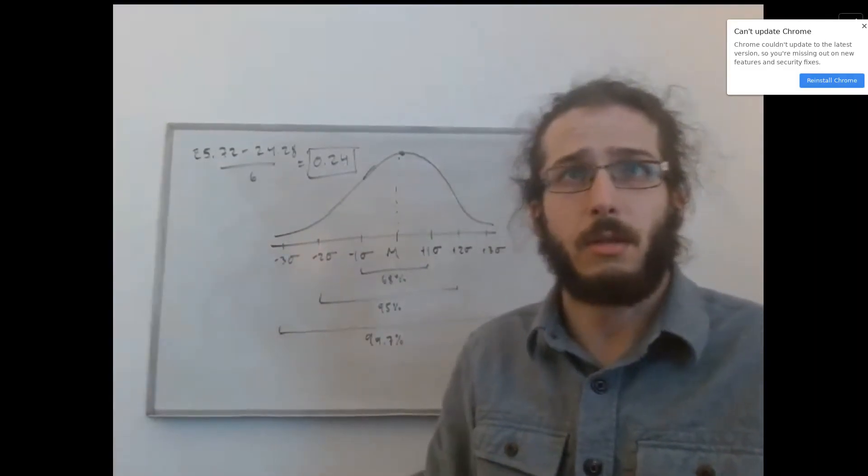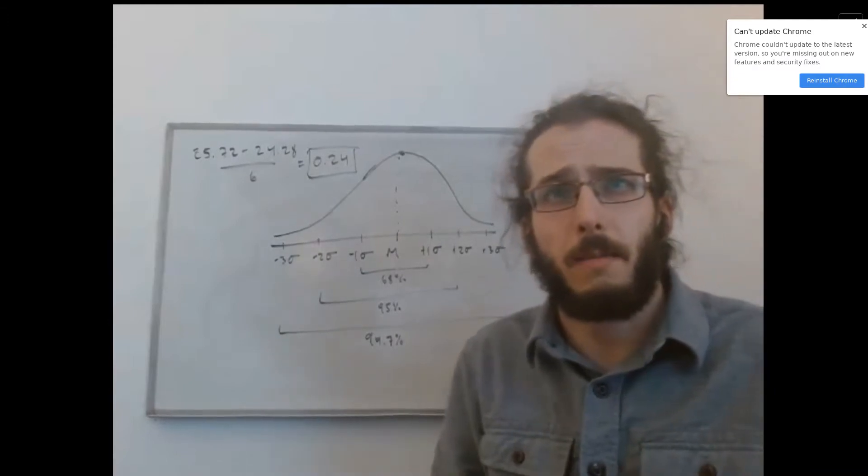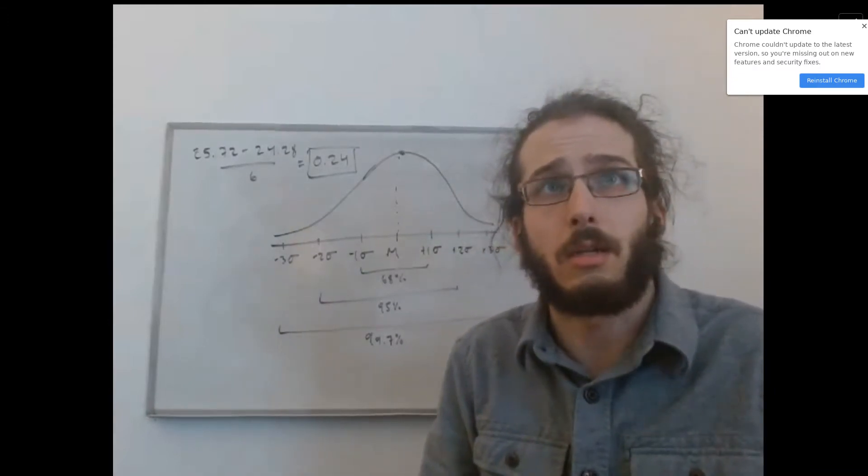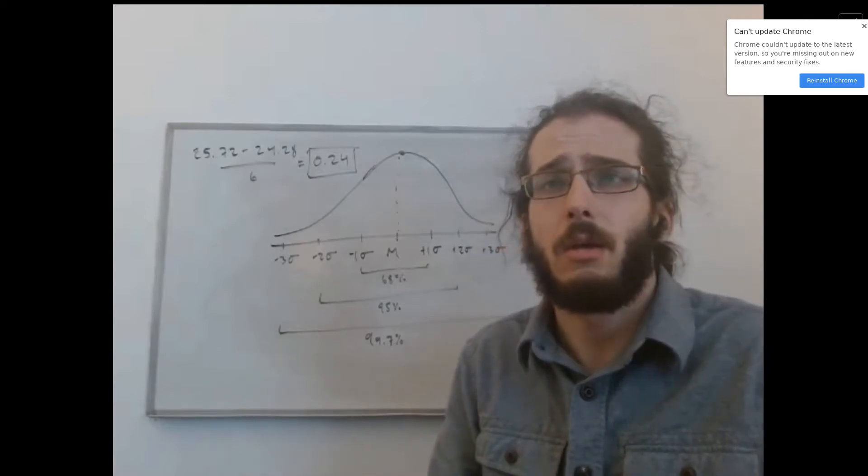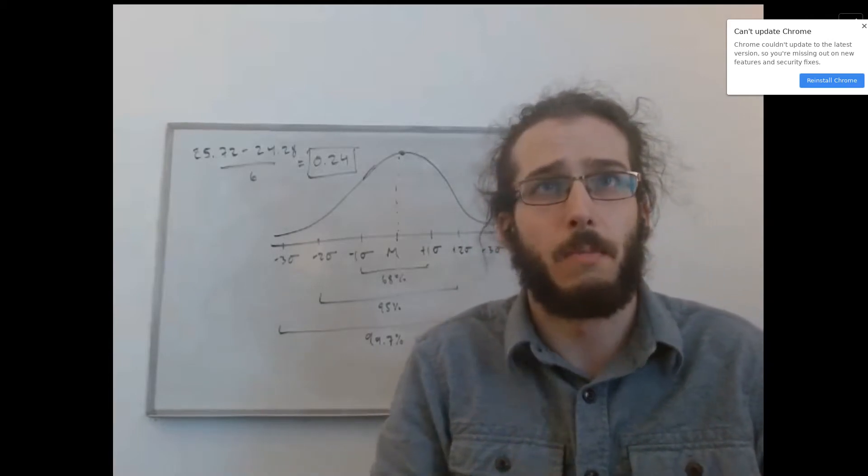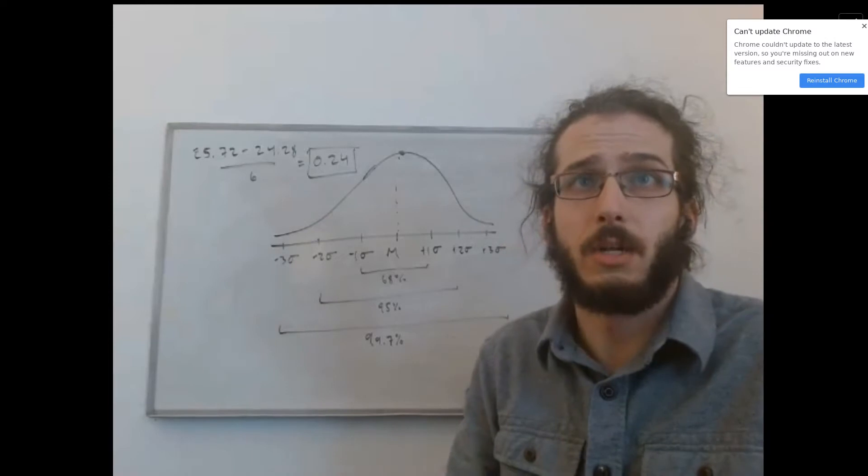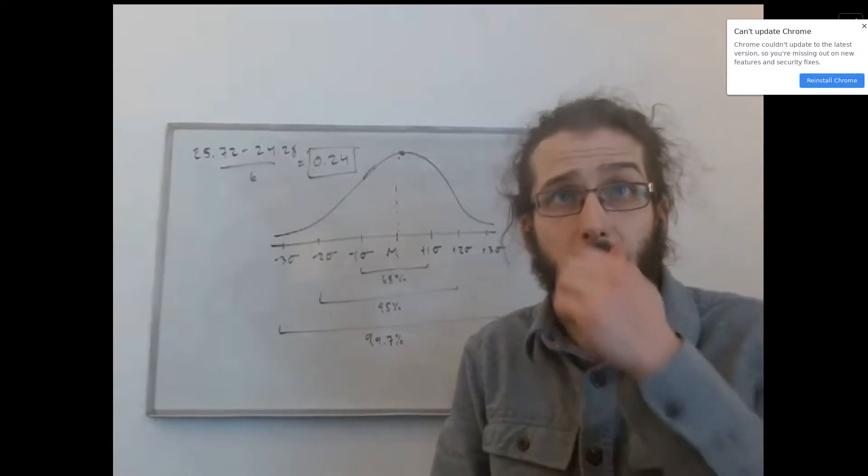Hello, and thanks for posting this question. So what we are being asked here is how to find the standard deviation of a set of data, given some information about what percentage of our range of data falls between particular values.